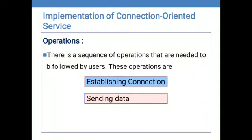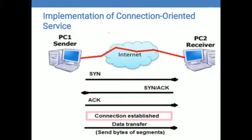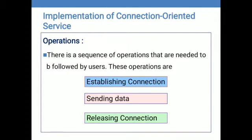After establishing the connection, the second operation is data transmission. Here we have PC1 as the source and PC2 as the receiver. PC1 wants to transmit data to PC2 through the internet. After completing the SYN, SYN-ACK, and ACK exchange, the connection is established between the sessions — source and destination. Then the data is transferred from sender to receiver in bytes of segments.